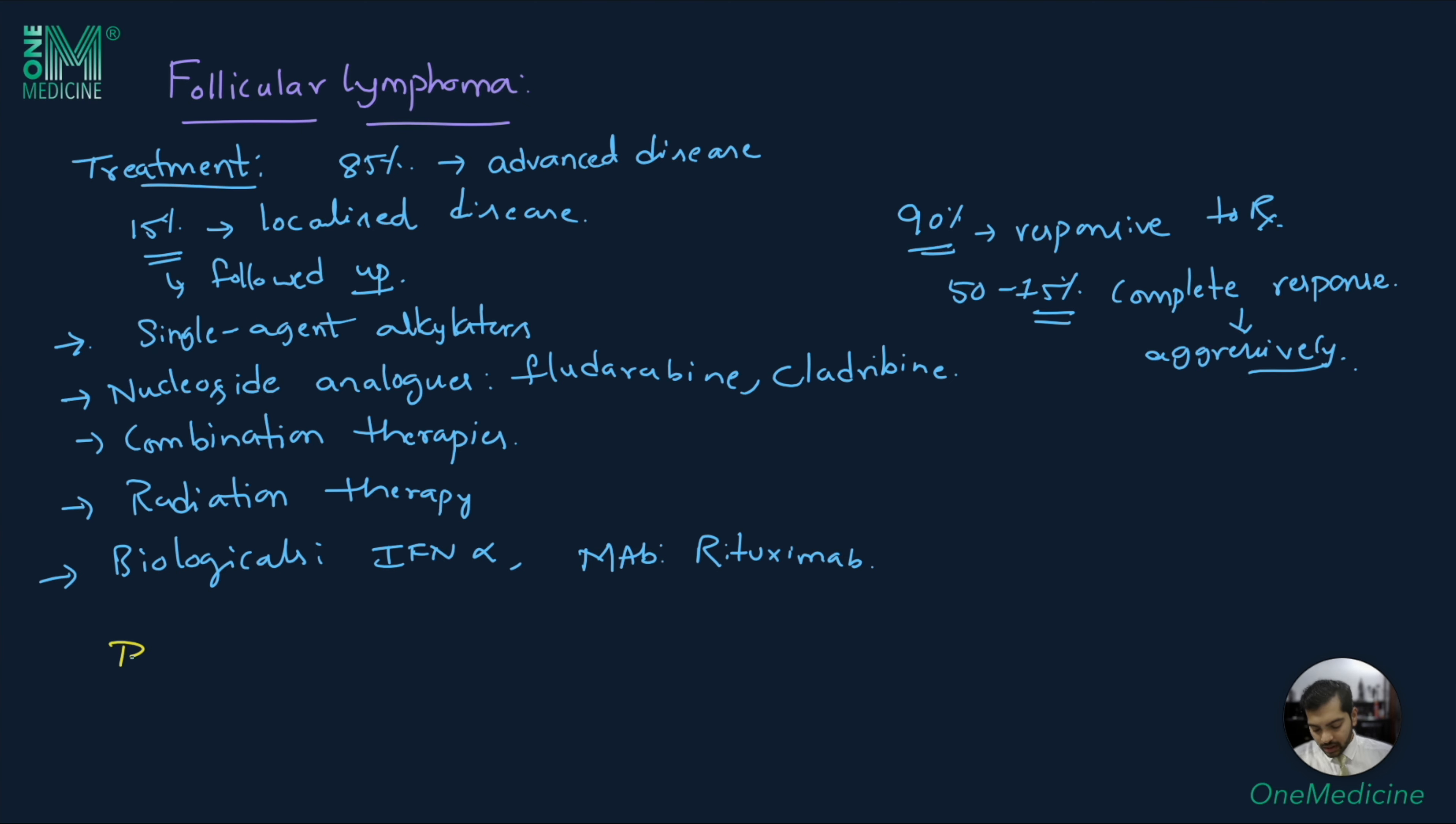Patients treated with R-CHOP, that is rituximab, cyclophosphamide, doxorubicin, and vincristine along with prednisone, have a median remission of around 6 years.